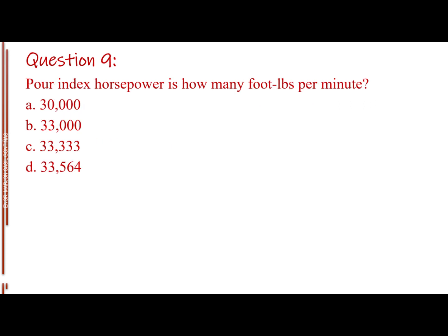Question number 9. One horsepower is how many foot-pounds per minute? Letter A, 30,000. Letter B, 33,000. Letter C, 33,333. Letter D, 33,564.